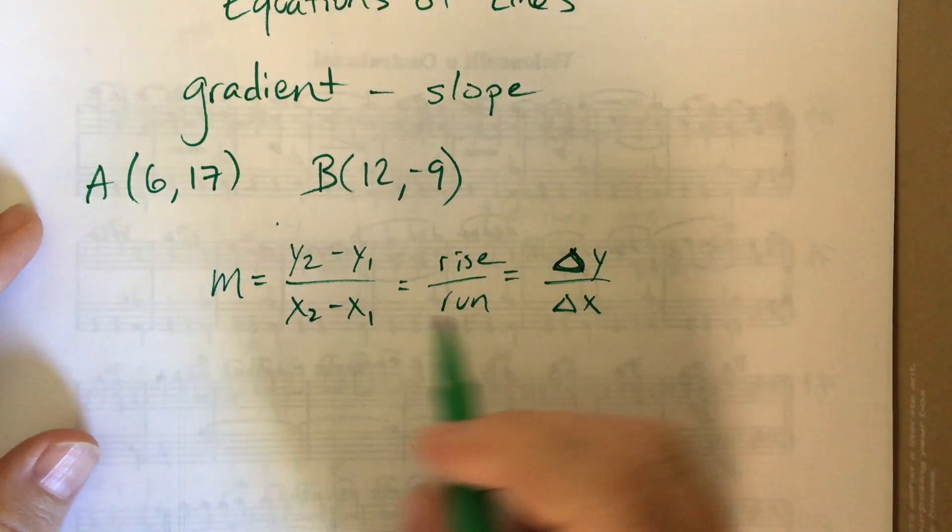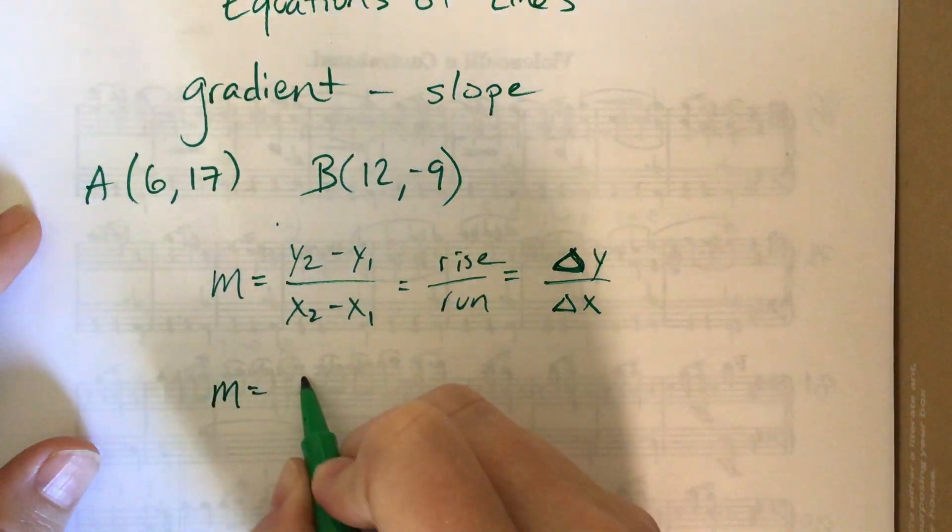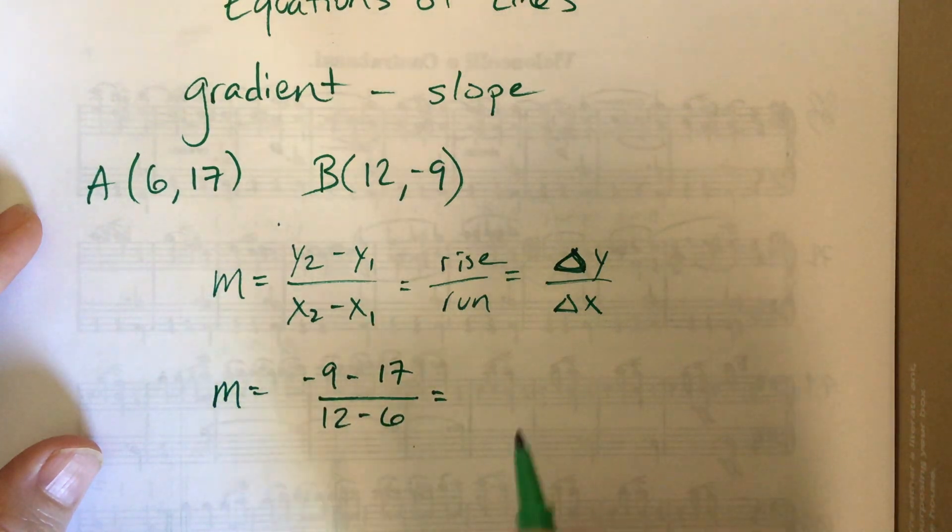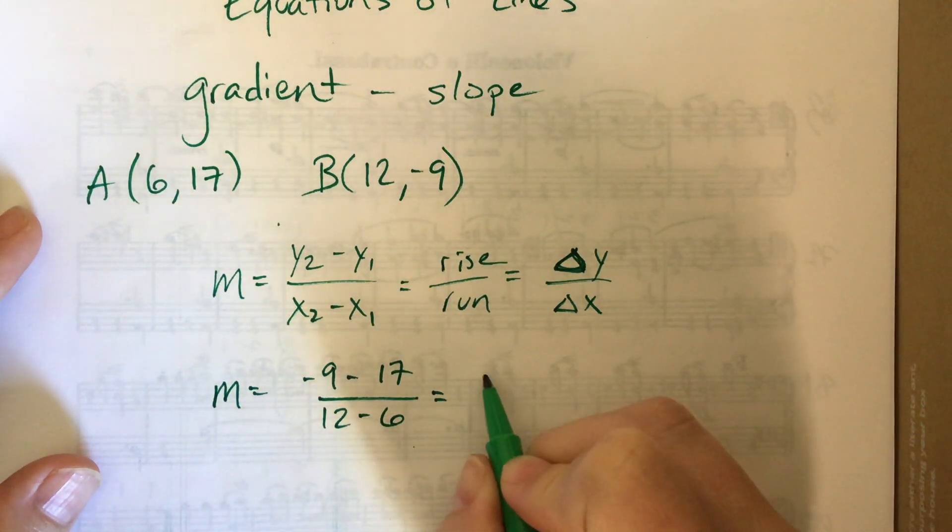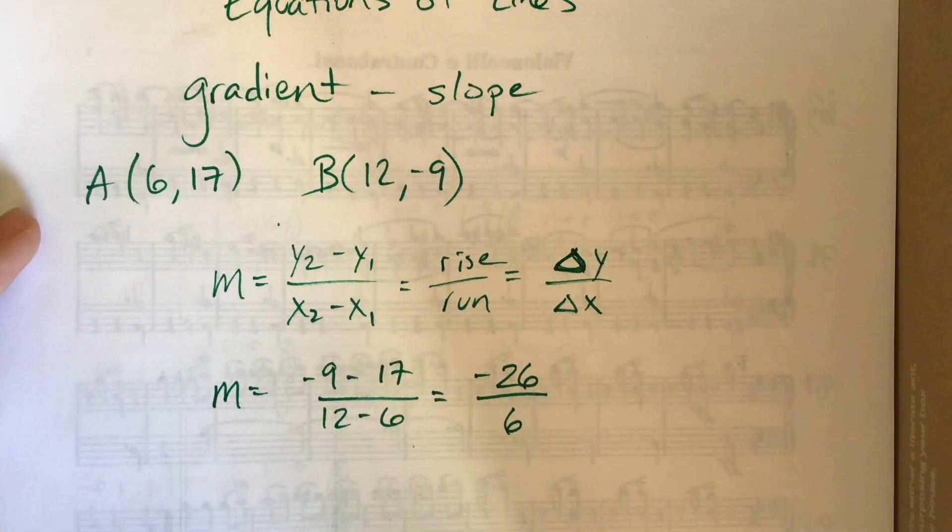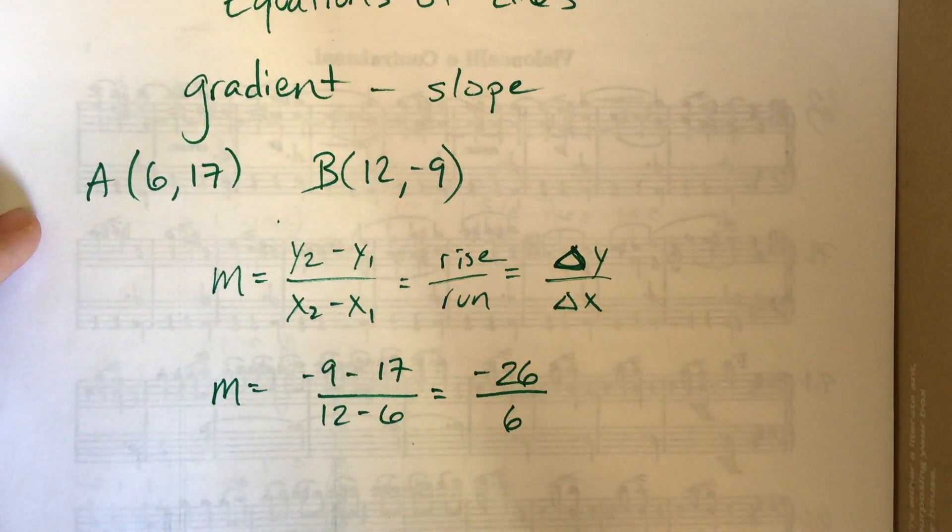Okay so I'm going to take the change in my y values, negative 9 minus 17 over 12 minus 6 is equal to, what is that, that's annoying, negative 26 over 6. Okay so, correct, yes.